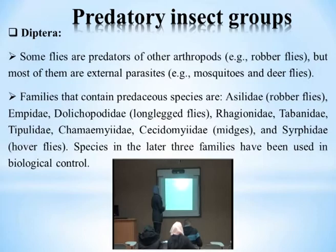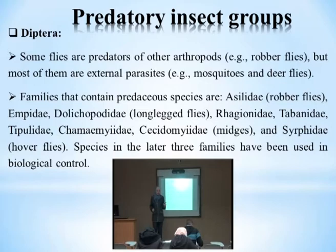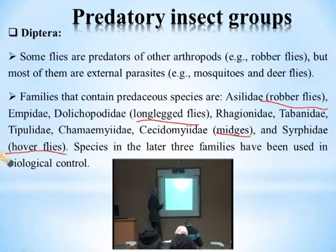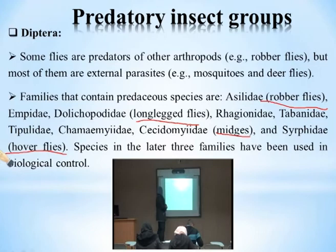Diptera — some flies are predators. These include robber flies, deer flies, long-legged flies, midges, and syrphid or hover flies. These can all be used — or may not be used — as biological control agents.